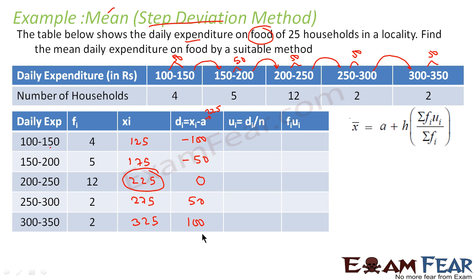Now since we are using step deviation, you see here 50 is the common number. 100 is equal to 50 × 2, 50 is equal to 50 × 1. So 50 is a common number. So I will assume that h is equal to 50.